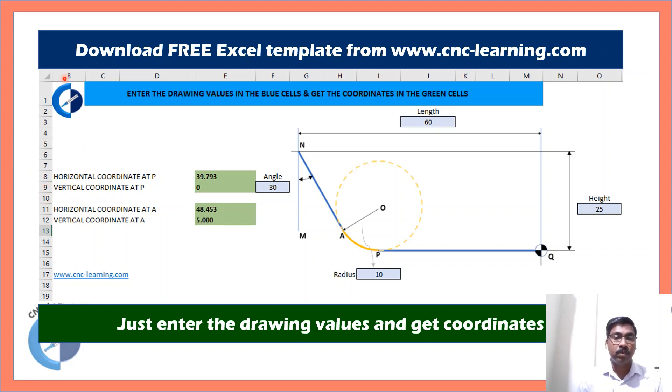Now, applying this in this you get PQ equals 60 minus 11.546 plus 8.66 equals 39.794. Now, the same calculation for any given length, height, angle and radius you can calculate these coordinates. Whatever calculation we have done here, these things can be calculated using a template. This excel template is available in www.cnc-learning.com. You can download it free of charges and just enter these values and get the coordinates.